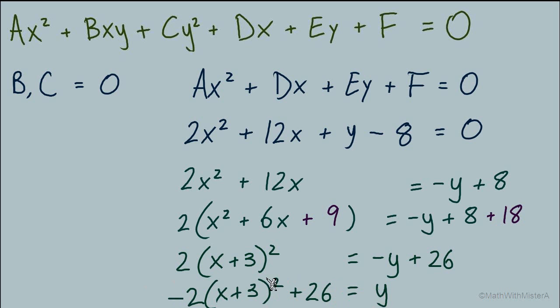Let's bring the constant 26 over to the left side. The last move, just a detail that we'd like to solve for y, but right now we're looking at negative y. So I will flip the signs of each term to get -2(x + 3)² + 26 = y.